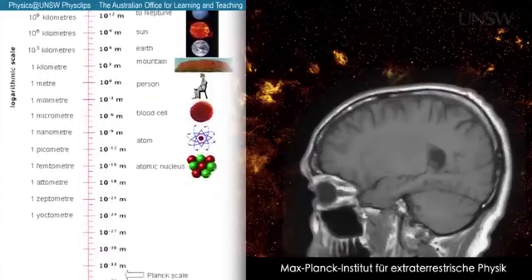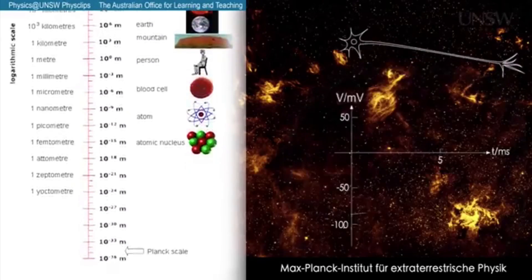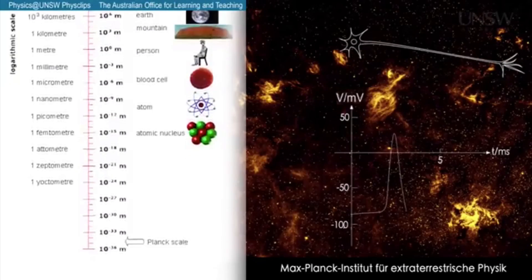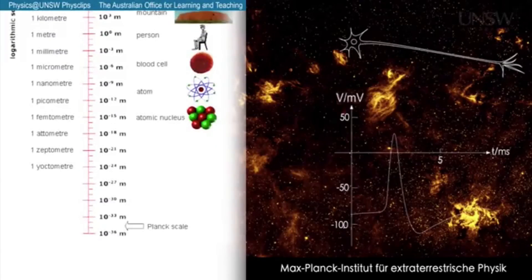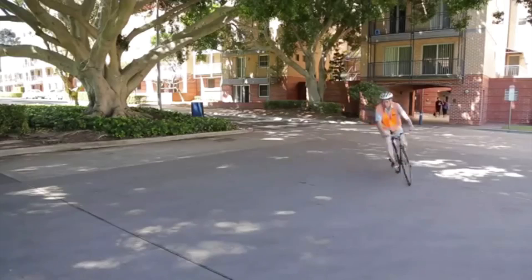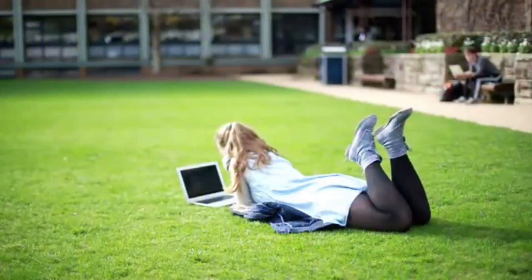At the intermediate scales, physics also provides answers not only in physics, but also in the other sciences such as chemistry and biology. For instance, we now understand some of the physical processes that go on when we're thinking about these questions. Meanwhile, all around us, physics is the basis of much of what happens in our everyday life and in most of the engineering and technology that we use.